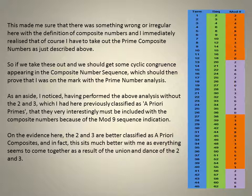This made me sure that there was something wrong here with the definition of composite numbers, and I immediately realised that you have to take out the prime composite numbers as just described above. So for primes 5 and greater, starting with 5 times 5 equals 25, etc., we take these out and we should get some congruence appearing if I was on the mark with the prime number analysis.